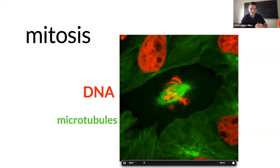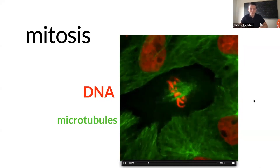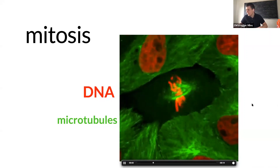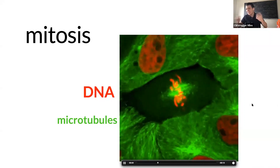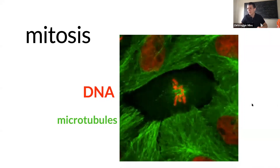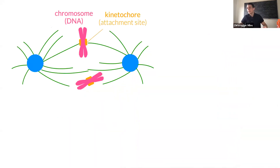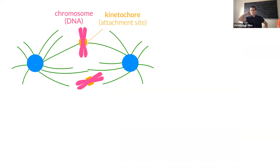A little bit later in the video, the division happens. The strands get ripped apart and each new cell gets its proper copy. Two new cells are formed, each with all the DNA it needs. The key thing is the spatial organization of DNA so that when the cell divides, each one gets its proper copy.